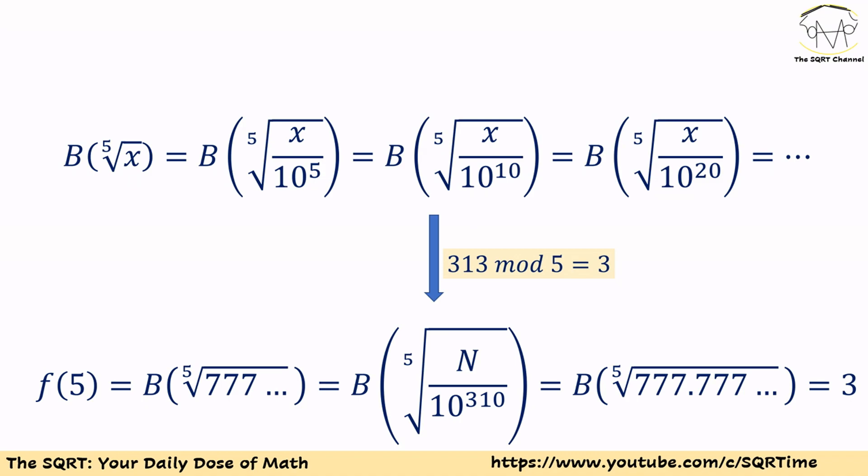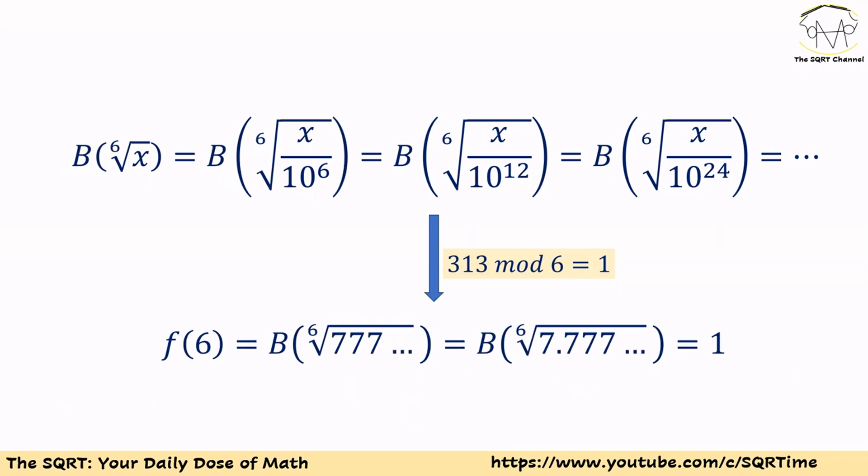For f(5), 313 mod 5 is 3, so the leading digit of the fifth root of N is equal to the leading digit of the fifth root of N over 10^310, which gives leading digit 3. For f(6), 313 mod 6 is 1, so the leading digit is going to be 1 again.